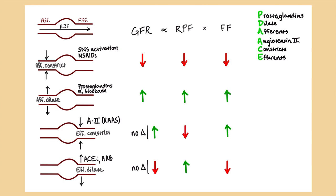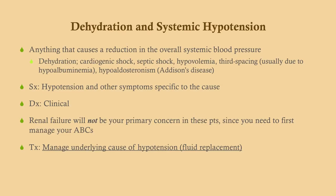Dehydration is probably the most common cause of pre-renal failure, as are other causes of systemic hypotension. Lower blood pressure means lower pressure in the glomerular capillaries, reducing GFR. Look for hypotension and symptoms specific to the cause — cardiogenic shock, septic shock. This is a clinical diagnosis, but in many cases renal failure is not your primary concern; stabilizing circulation comes first.